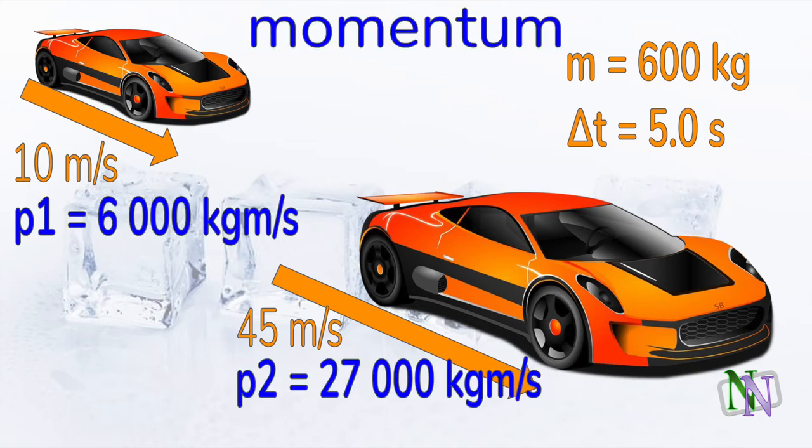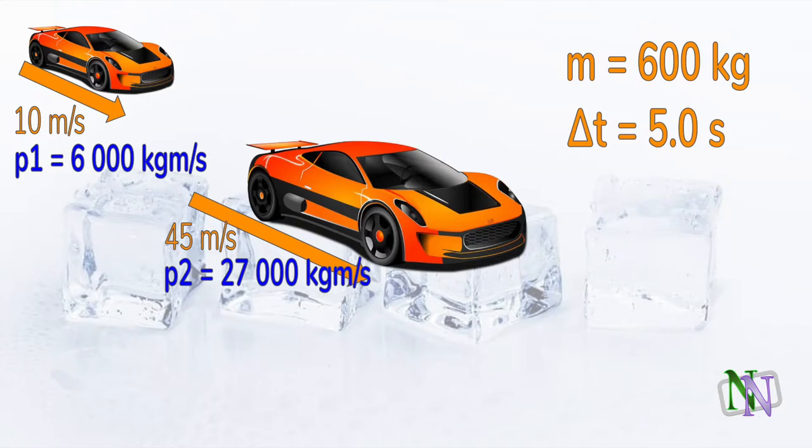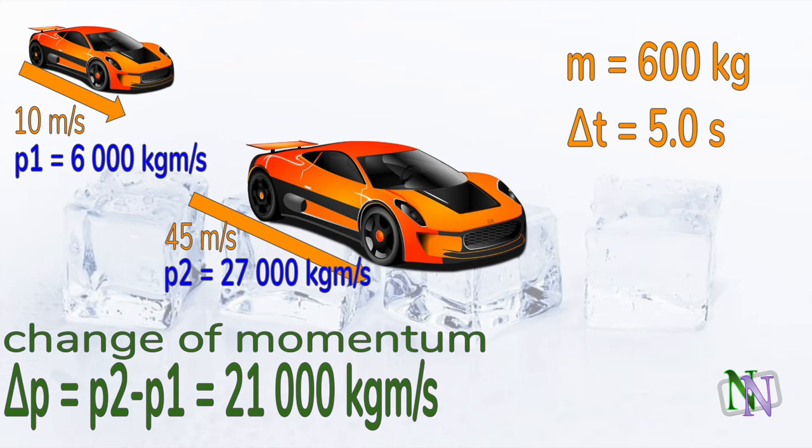At the start, the car has a momentum of 6,000, which increases to 27,000 kilogram meters per second. Now we can work out the change in momentum. And that is the difference between P2 and P1, which is 21,000 kilogram meters per second.